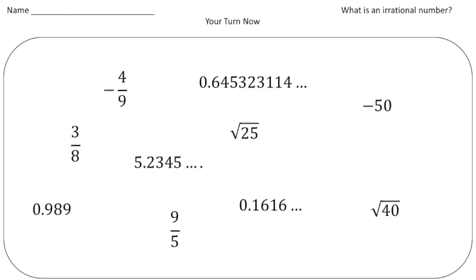Welcome back. Let's see how you did with these practice problems. We want to identify the numbers that are irrational. Remember these numbers that are irrational cannot be written as fractions. So let's see, 4 ninths certainly is rational because that's a fraction. 3 eighths is rational, that's a fraction.